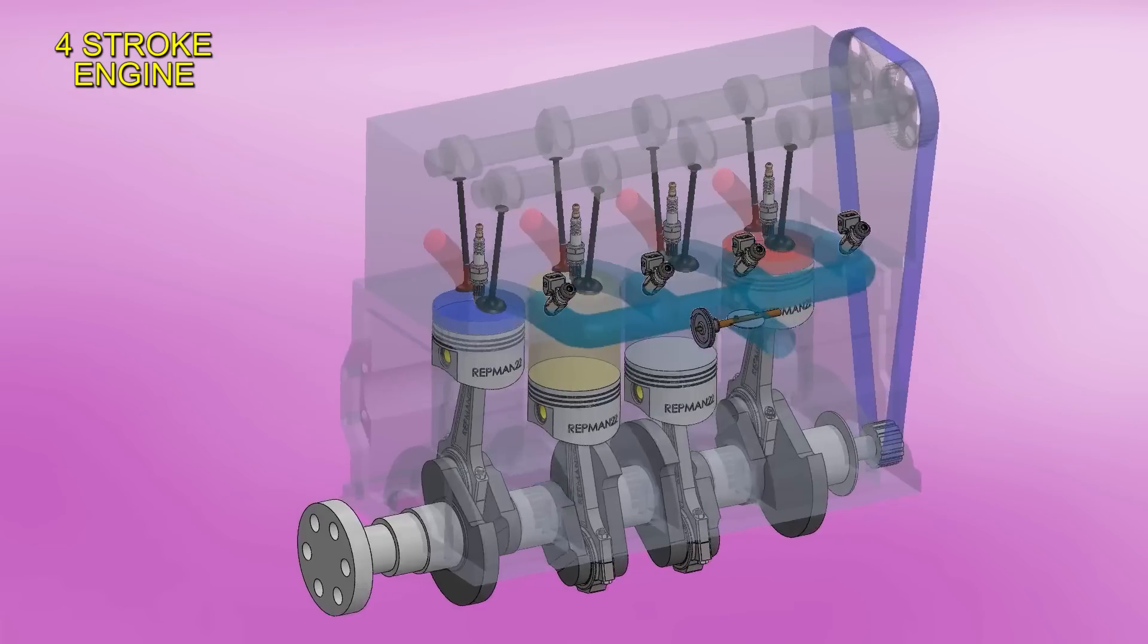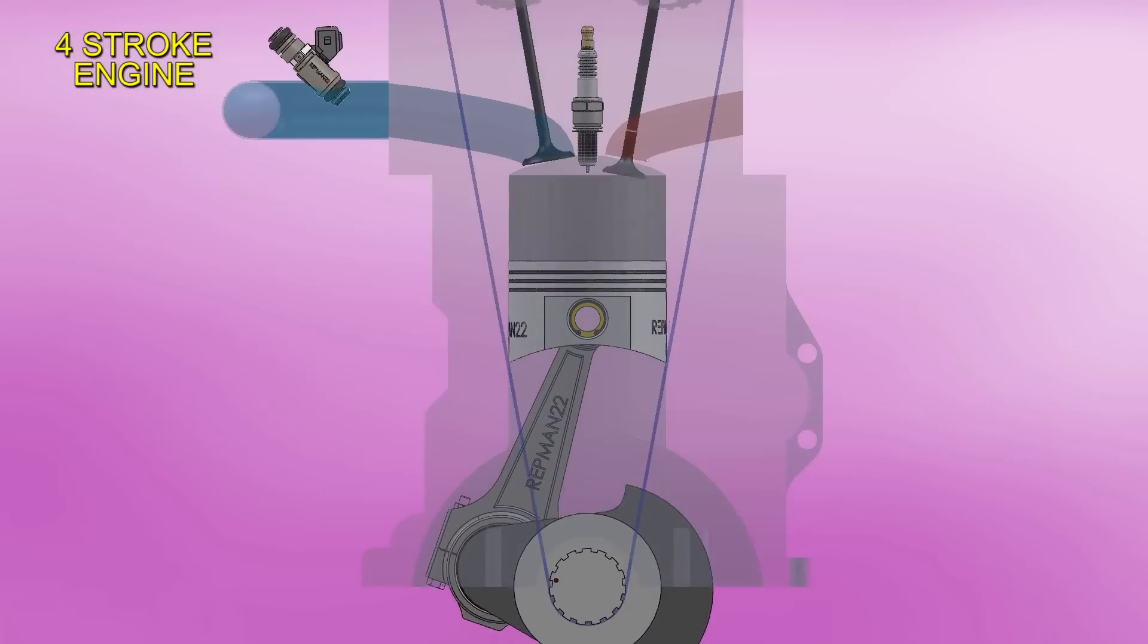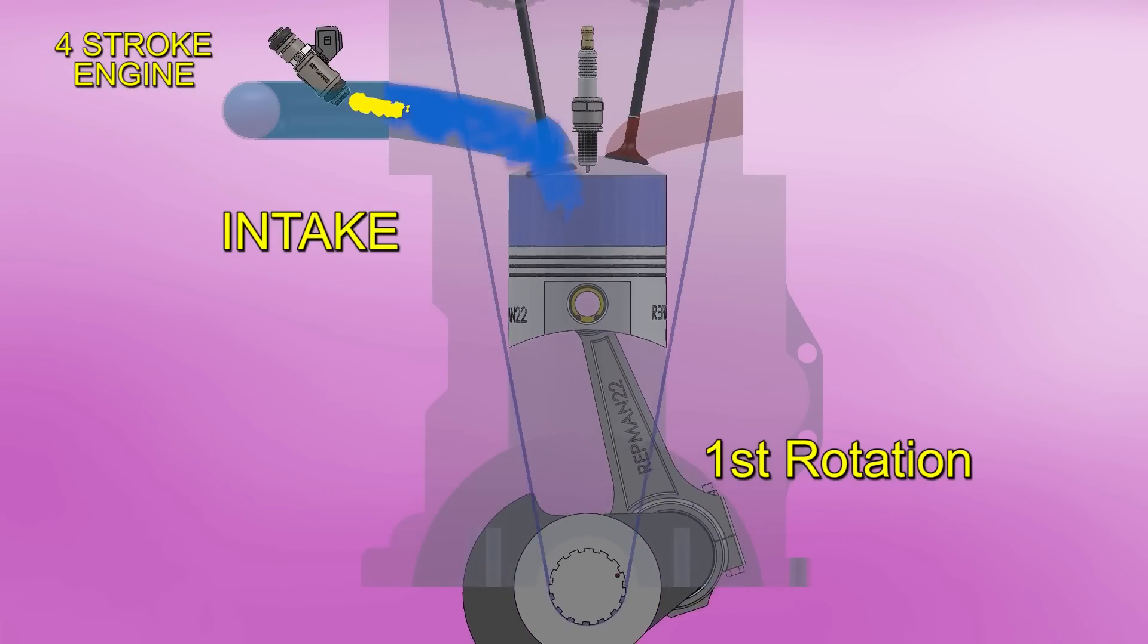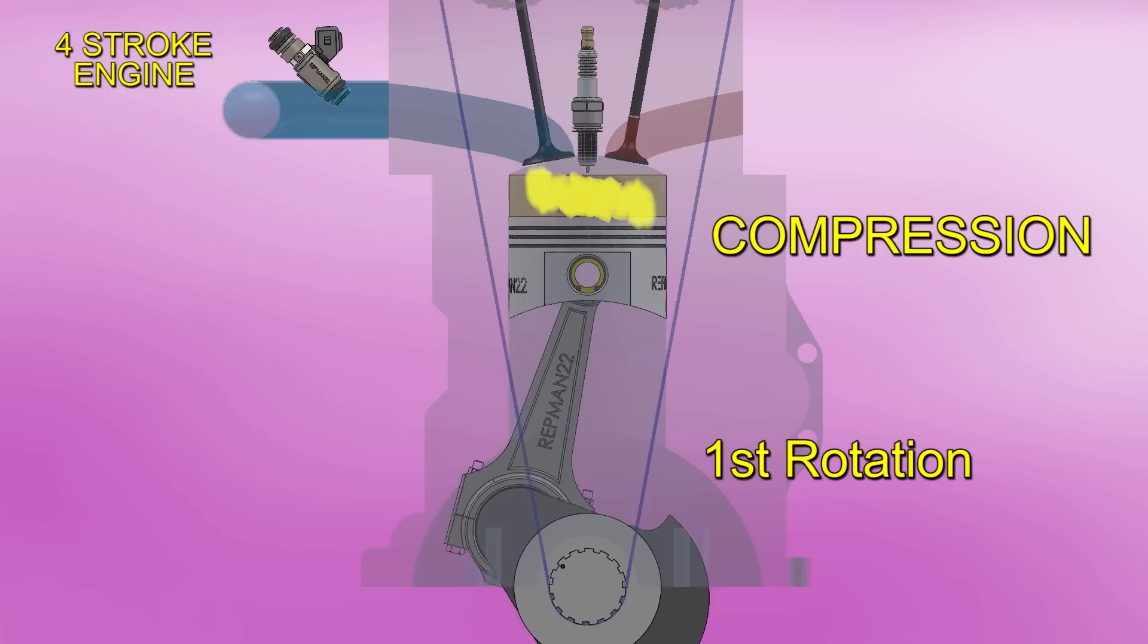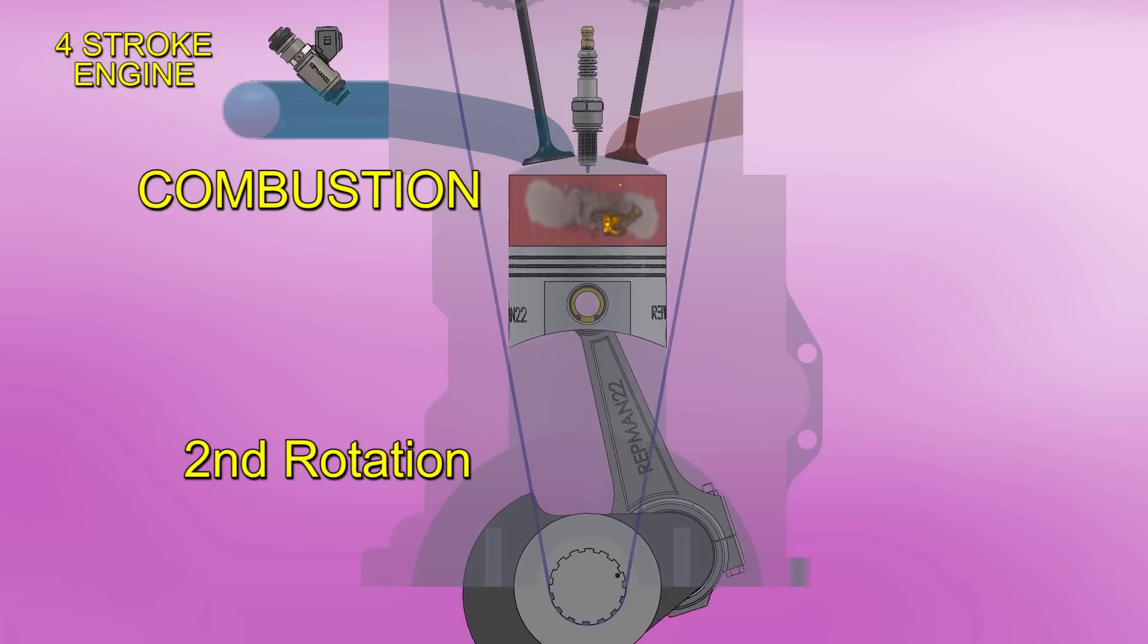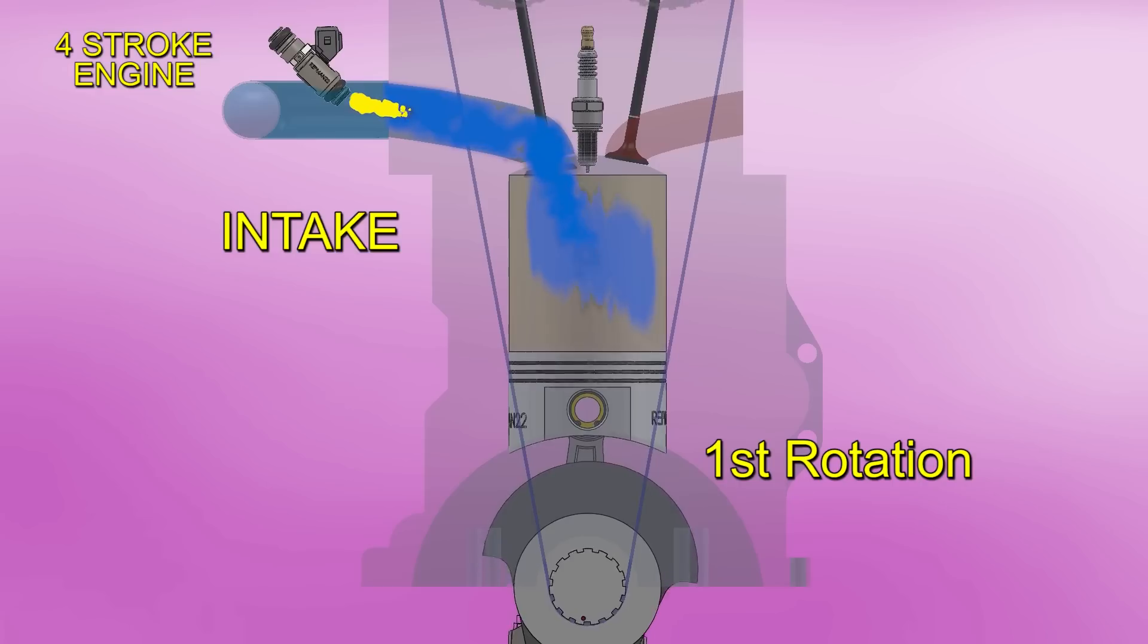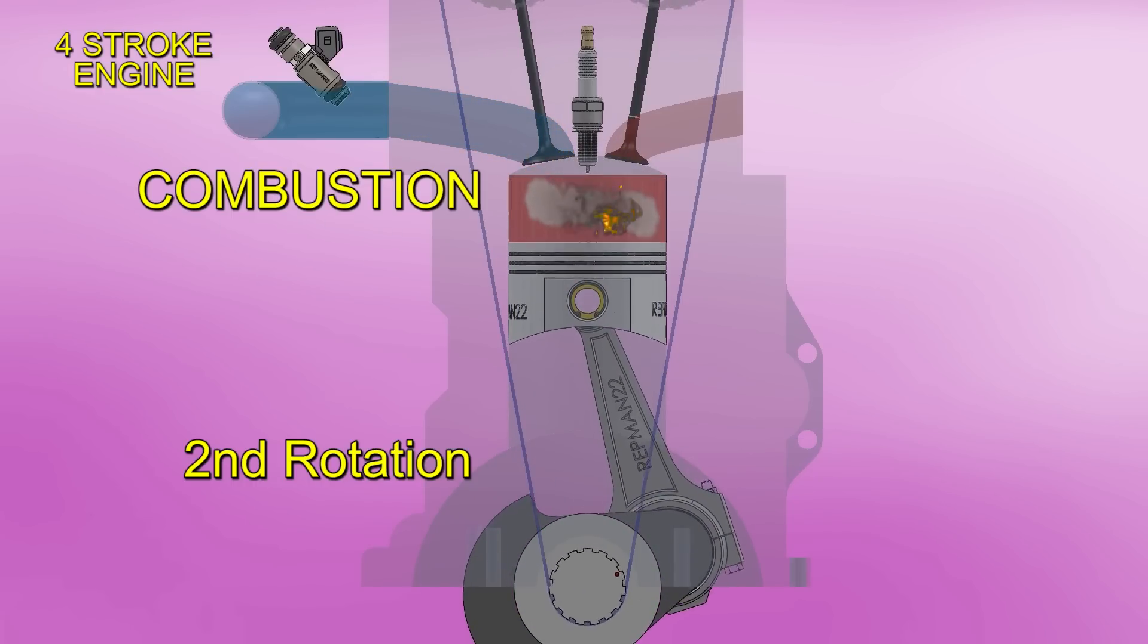A four-stroke engine has to make two rotations to produce power. That is to say, in the first rotation, it makes the intake and the compression stroke. Then in the second rotation, it combusts and exhausts. I repeat, two rotations are needed to burn fuel. The cylinder is only used at 50%.